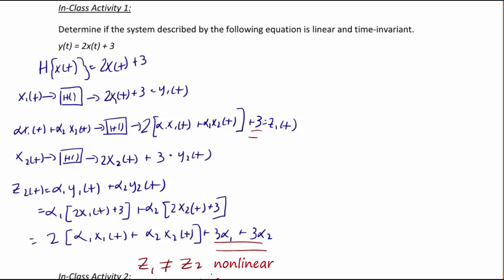A quick way to determine the system is nonlinear is because it does not obey the homogeneous property. The homogeneous property requires that for an input of zero, the output must be zero. Here, if x(t) = 0, the output is actually 3, meaning it has an initial condition of 3, so we can quickly see this is not a linear system.